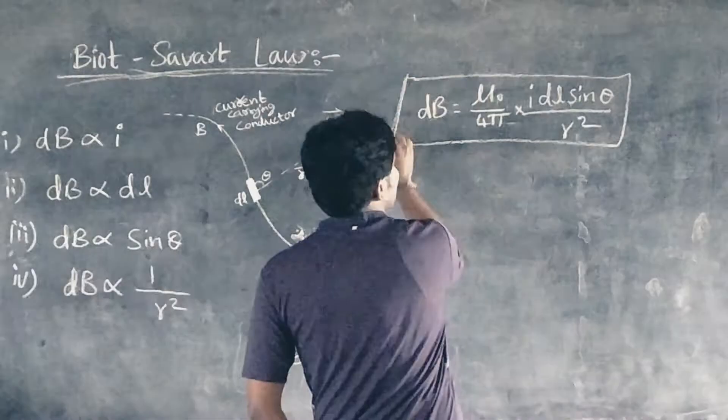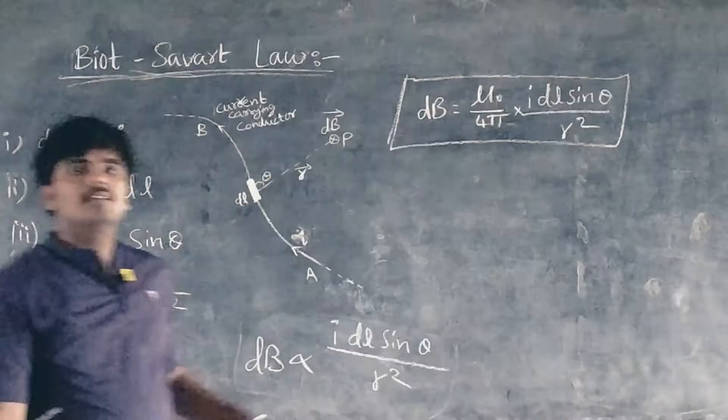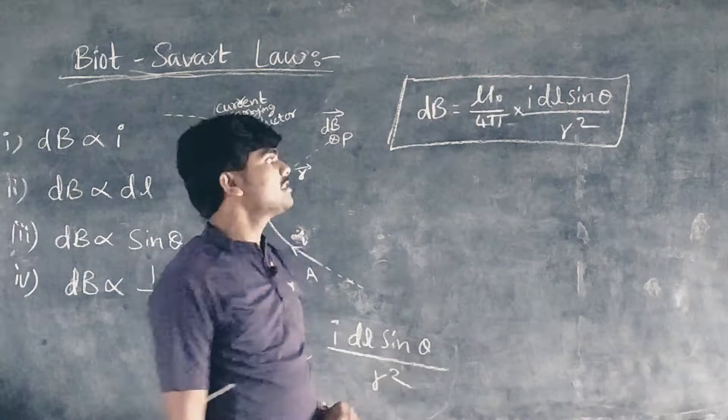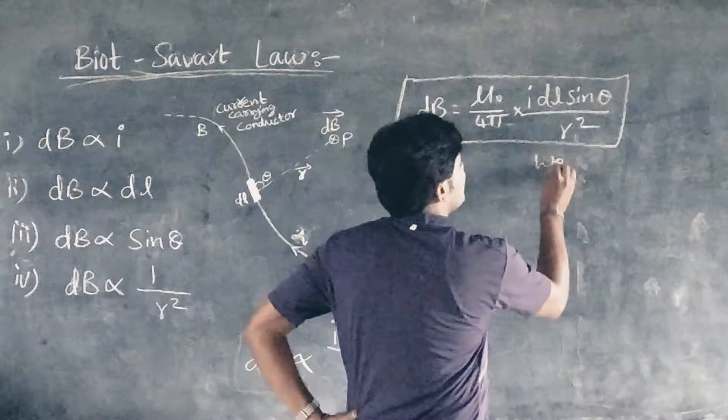This is called Biot-Savart's law, where mu naught by 4 pi is the proportionality constant and mu naught is the permeability of free space. The unit of dB is weber per meter square or tesla.